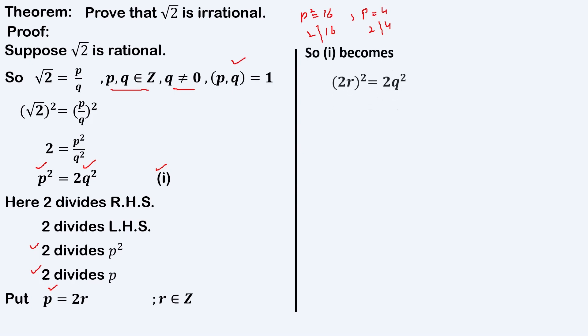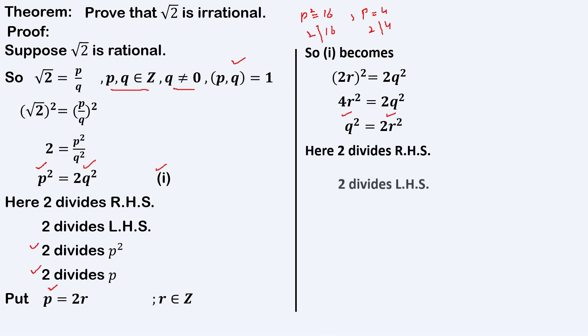Now we replace this value of p in equation 1. Equation 1 becomes: 2r squared equals 2q squared, so 4r squared equals 2q squared. Applying the cancellation law, we get q squared equals 2r squared. Again, the right-hand side is divisible by 2, so the left-hand side must also be divisible by 2.